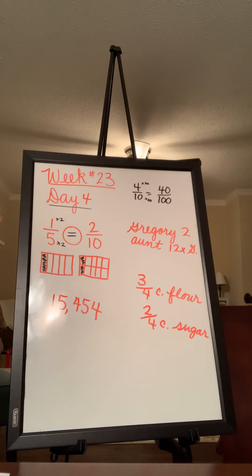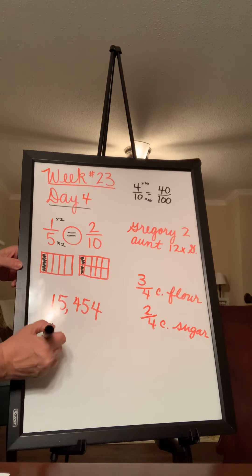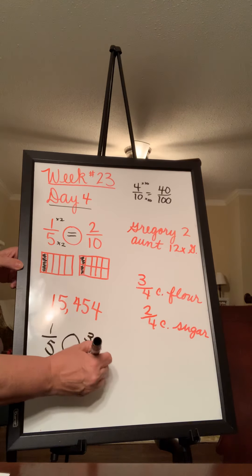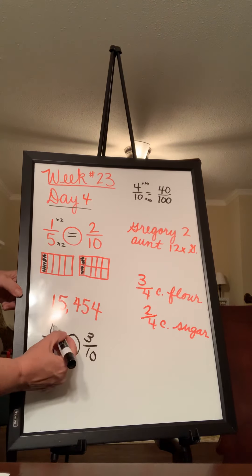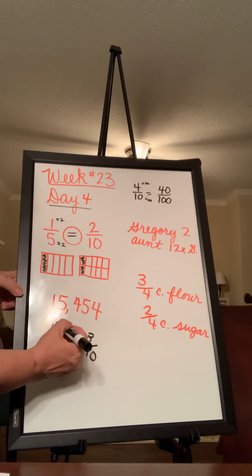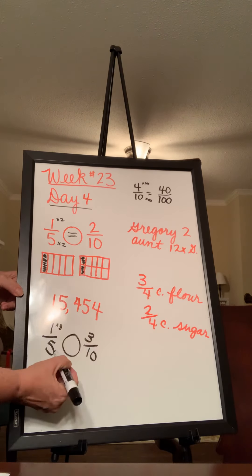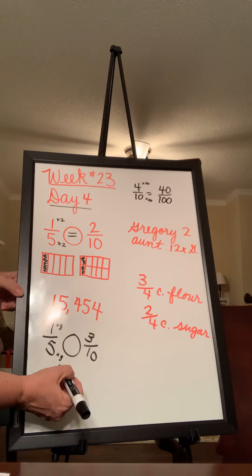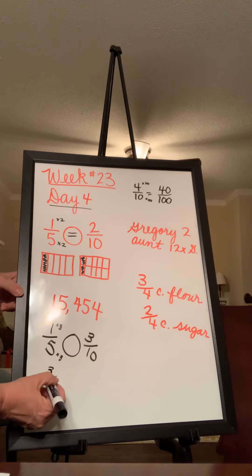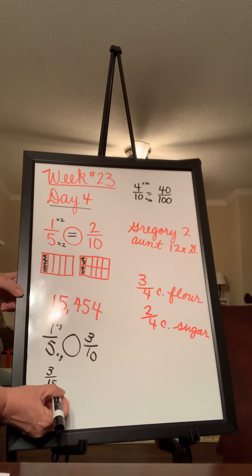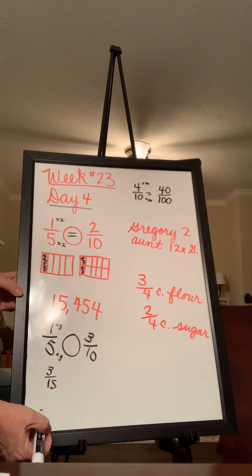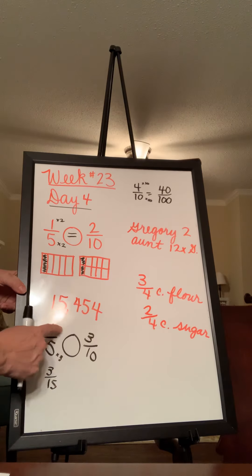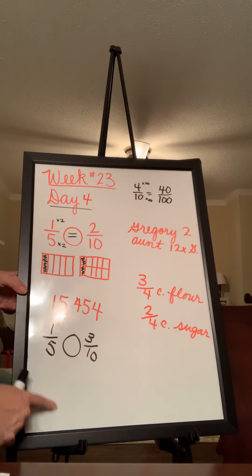If you were, say, comparing one-fifth with three-tenths, just to give you an example, you might say, well, 1 times 3 is 3. But then 5 times 3 would be 15. So one-fifth is the same as three-fifteenths. That's still not necessarily going to help you. So you would have to do the bottom number first.